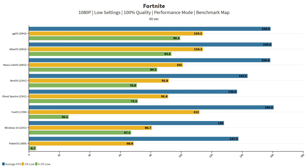For Fortnite I used 1080p low settings at 100% render quality with performance mode on, then ran the benchmark map. Fox OS again has the best FPS, though partly because it's 1709. The 0.1% lows are pretty bad on Fox OS, and keep in mind I didn't use CapFrameX for those. GGOS is really good here, as are Atlas OS and Nexus. Windows 10, Probably OS, Ghost Specter, and Revi weren't as strong for Fortnite — the differences here are actually kind of insane.